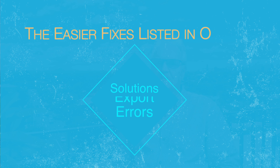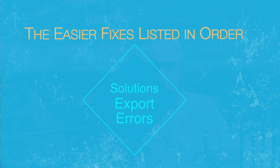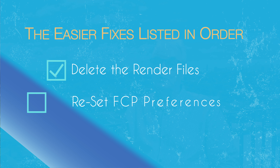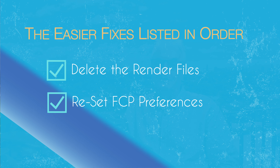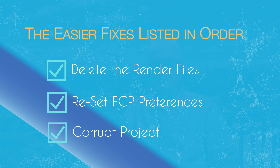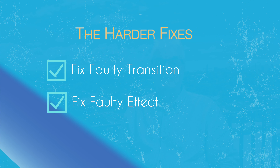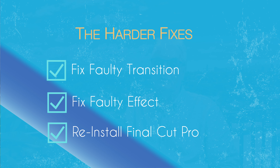It pays to update Final Cut Pro to the latest version as well as the latest version of the Mac OS. Here are some other possible causes listed in order of ease of fixing. The easier fixes are to delete the render files or reset Final Cut Pro's preferences, or there may be a corrupt project. The harder fixes are to fix a transition or an effect, and finally you may need to reinstall Final Cut Pro.